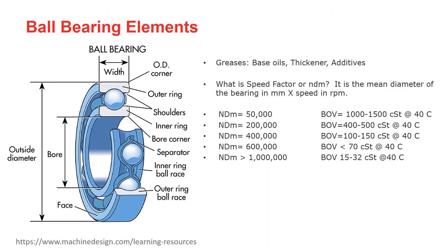Ball bearing elements. Every single ball bearing, either single or double row, has some common components such as inner races, which we identify by bore diameter, outer races, which we identify by outside diameter, the thickness or width, cage or separator, and balls.